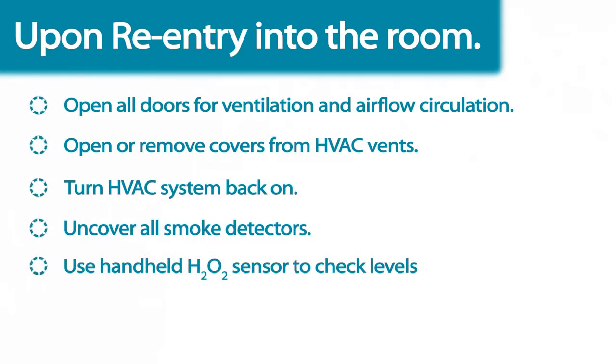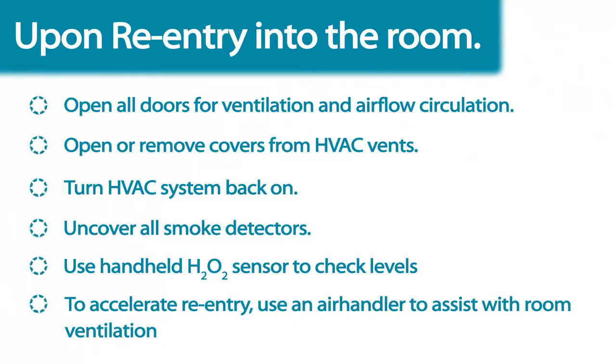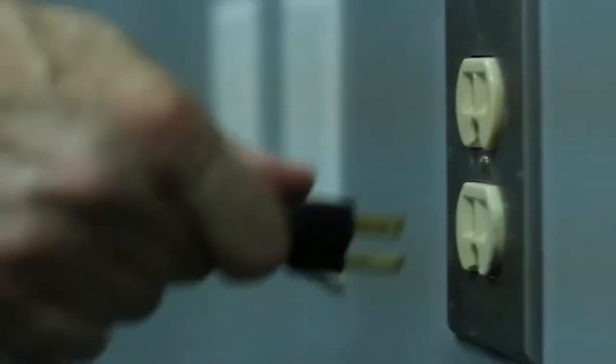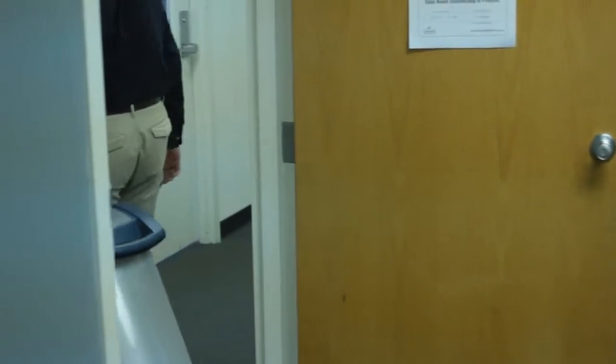Sanosil also recommends the use of a handheld hydrogen peroxide sensor to check for safe levels. To accelerate re-entry into the room, you can use an air handler to assist with ventilation. When the treatment process is complete, unplug the Halo and remove the unit from the room.